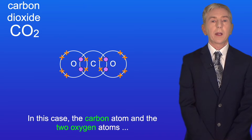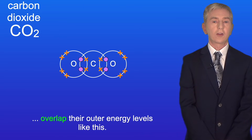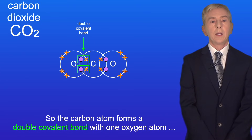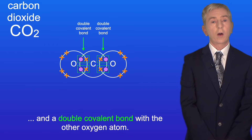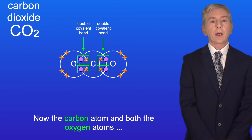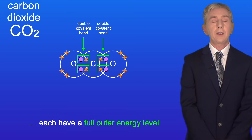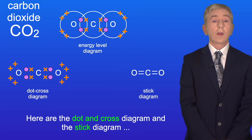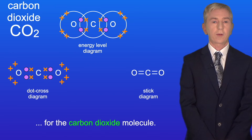The carbon atom and the two oxygen atoms overlap their outer energy levels. The carbon atom forms a double covalent bond with one oxygen atom and a double covalent bond with the other oxygen atom. This means the carbon atom and both oxygen atoms each have a full outer energy level. Here are the dot and cross diagram and the stick diagram for the carbon dioxide molecule.